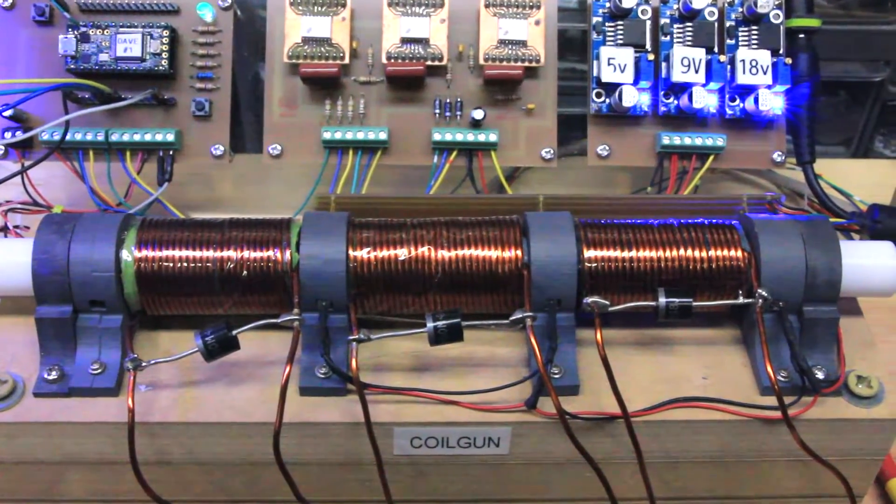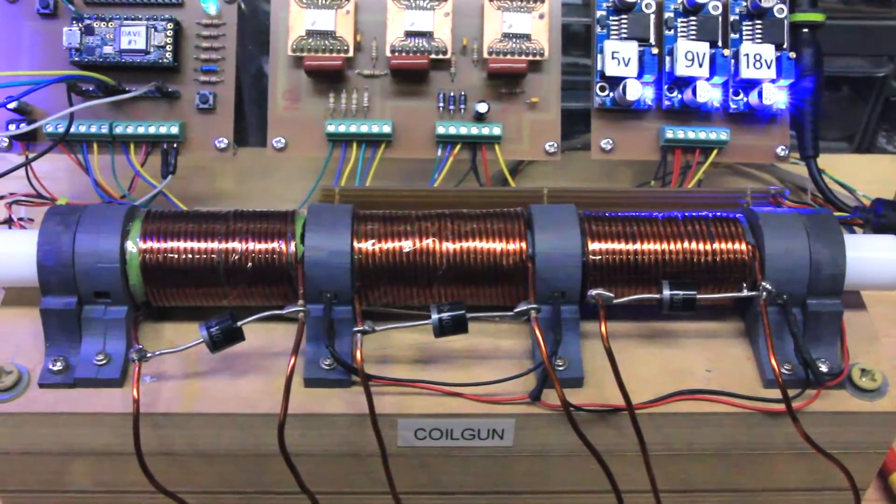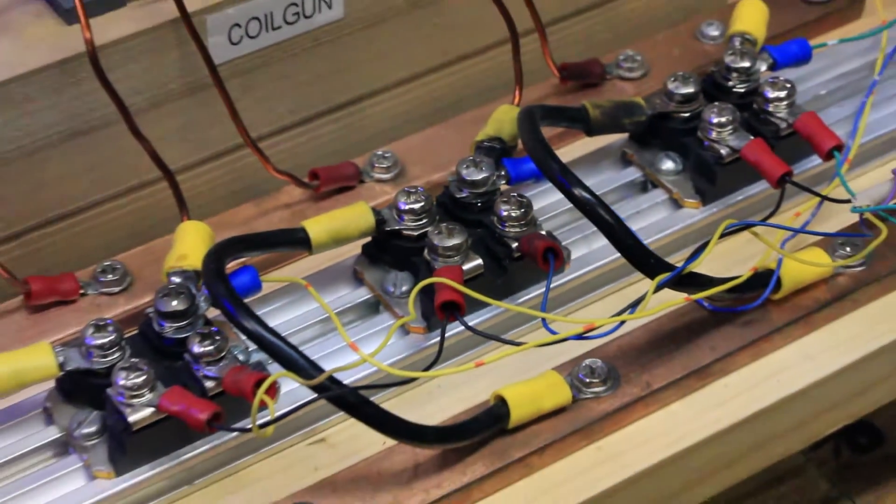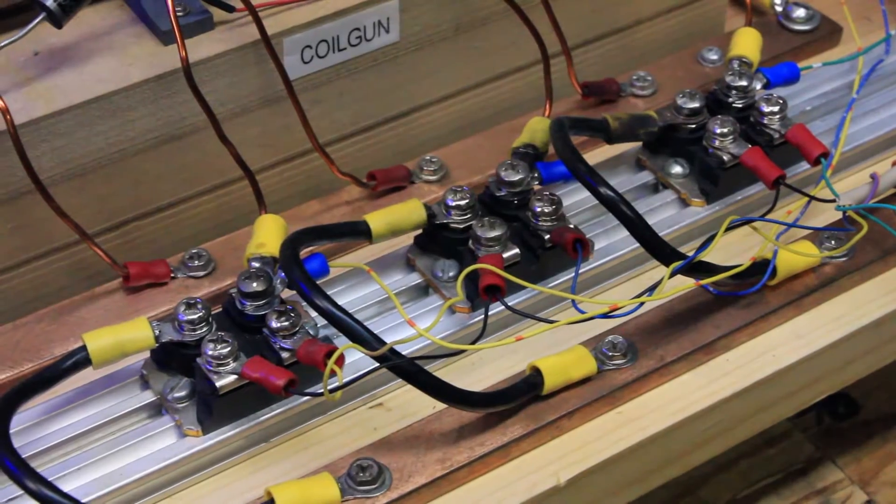Each stage consists of a coil wound 80 times with a 14 gauge wire, a flyback diode, a gate driver and a high power MOSFET.